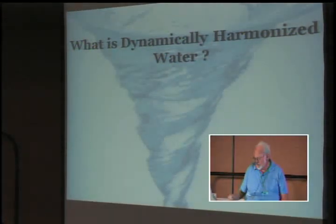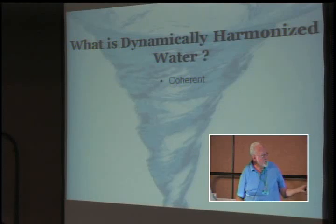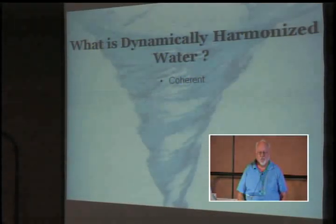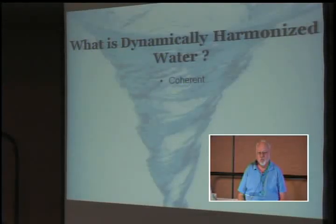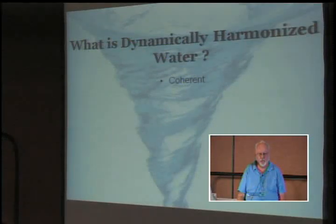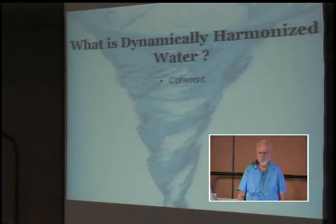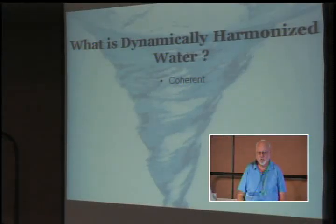What is dynamically harmonized water? It is coherent. Coherent means that everything in water's environment is working together. Think of a million fish swimming together — every fish knows the movement of all the others, swimming very fast in harmony and coherence. We see this coherence with structured water in strawberry fields: when given this kind of water, when one plant blooms, they all bloom simultaneously; when they put on fruit, they all put on fruit simultaneously. That's coherence.